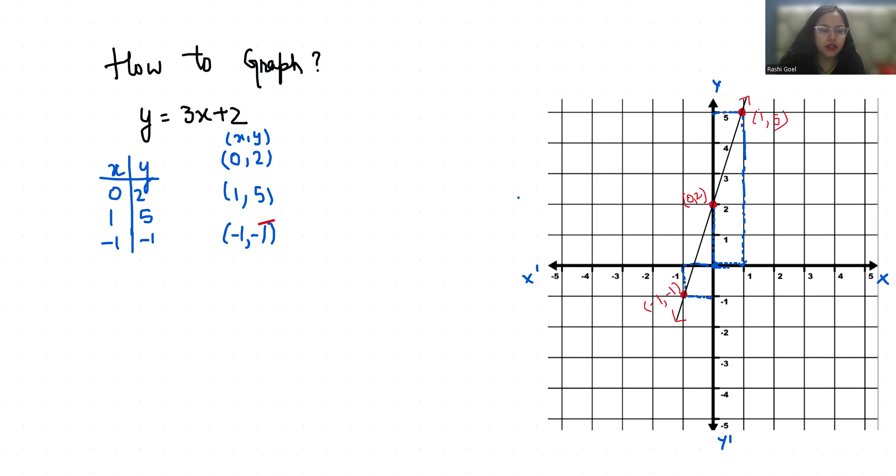Now we will check with the intercept formula. That is y equals mx plus b, where m is the slope and b is the y-intercept.